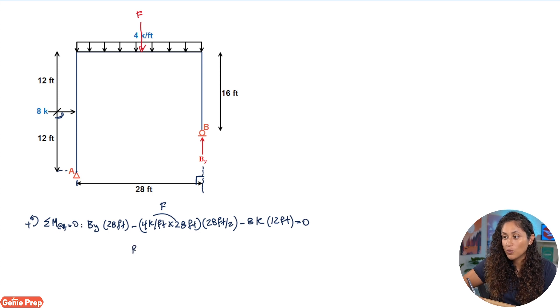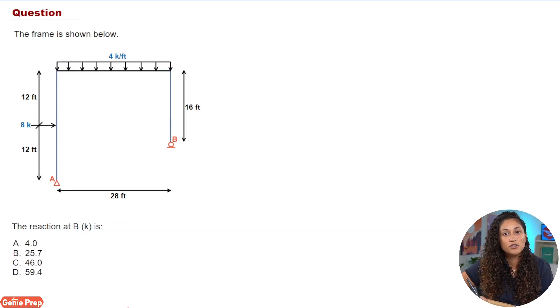So if you guys rearrange this equation, meaning you take this term here, this whole term, to the other side, and then you do plus this term here, so both of these terms are gonna become positive because we're gonna take them to the other side, and then you're gonna divide by 28, and if you plug that into your calculator you're gonna get 59.4 kips. This number came up to be positive which means our assumption is correct and that BY is going up. So if we take a look at the multiple choice, the answer is going to be D.